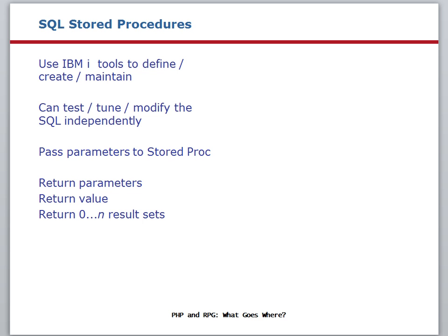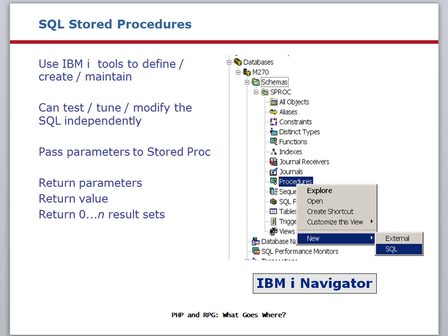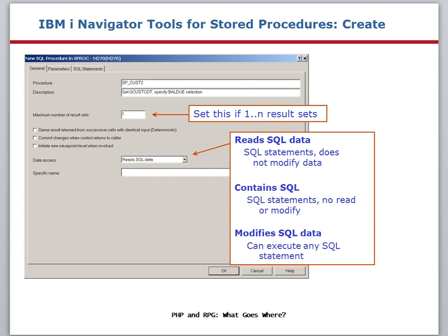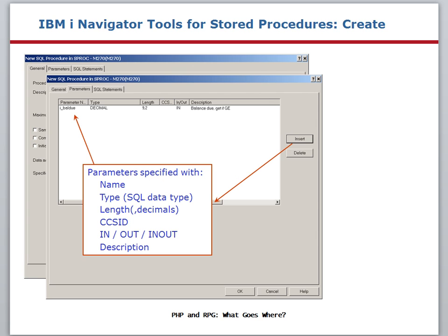To get started with stored procedures, you can use the IBM i Navigator. In its databases feature, right-click the schema name where the stored procedure is to be created. A schema can be an IBM i library name, so you can use any library on your system that you have access to. Right-click on the procedures item and select the new SQL menu item. The new SQL procedure dialog is shown. On the first panel, enter a name for the procedure and an optional description. If the procedure includes select statements that are meant to return data, enter a value for the maximum number of result sets. Select one of the data access values as shown here. Next, click the parameters tab. On this panel, you enter the parameter list for the stored procedure. The parameter names that you enter will be available for use as substitution variables in the SQL statements in the stored procedure.